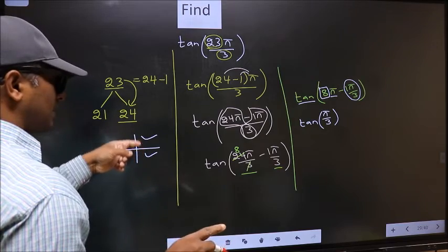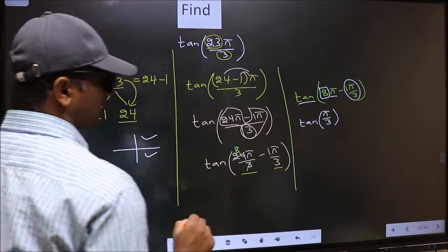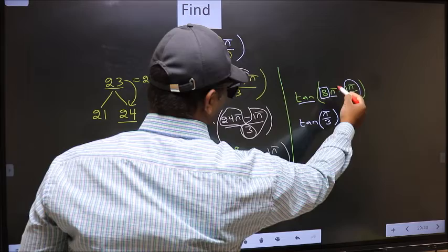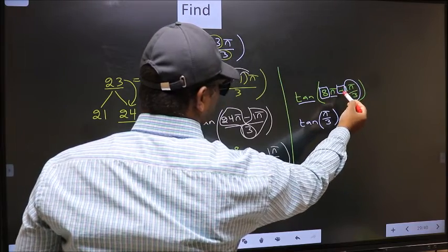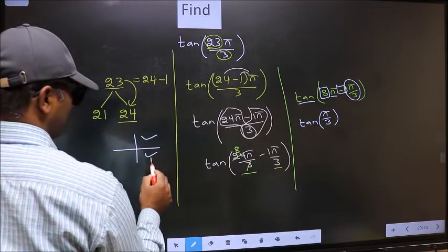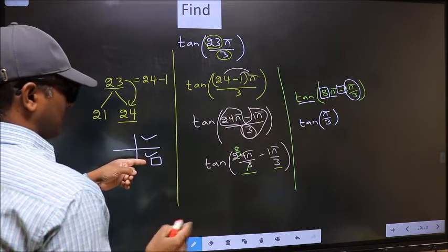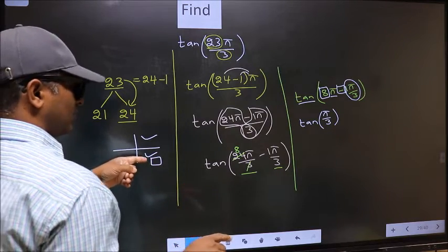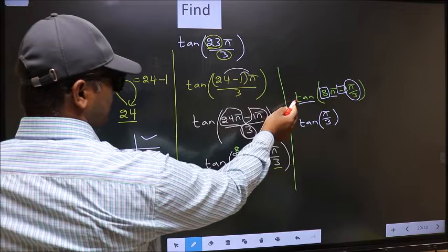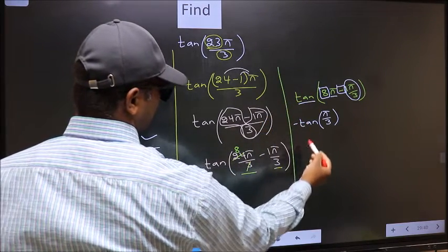To select the quadrant, we should look at this symbol. Here we have negative, which means the angle lies in the fourth quadrant. In the fourth quadrant, tan is negative, so we should put negative.